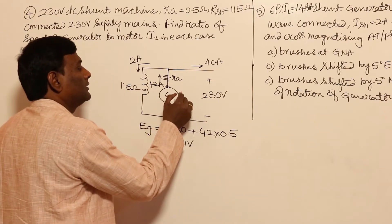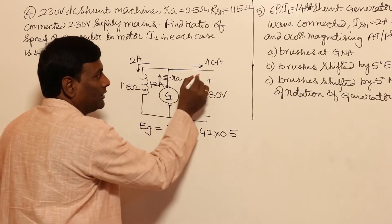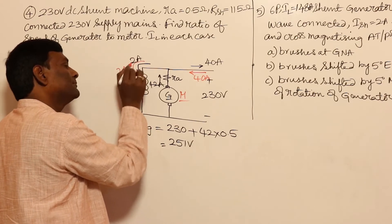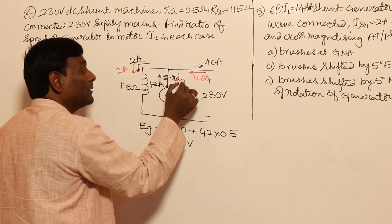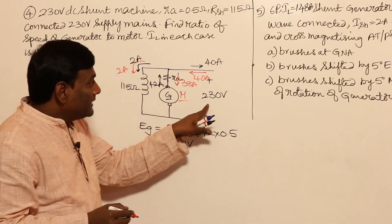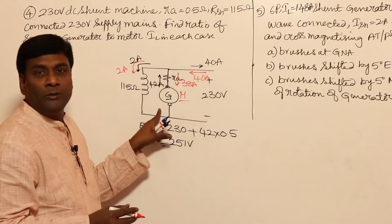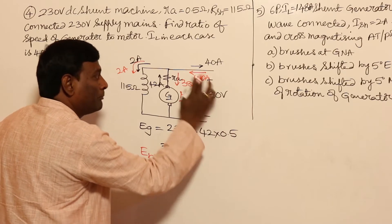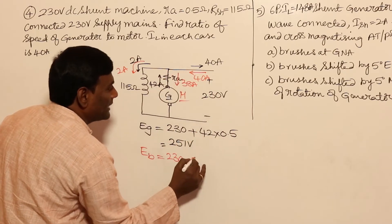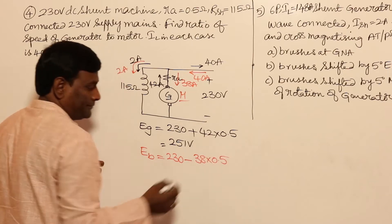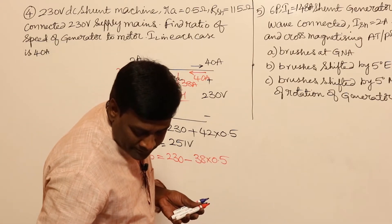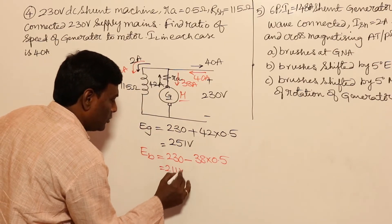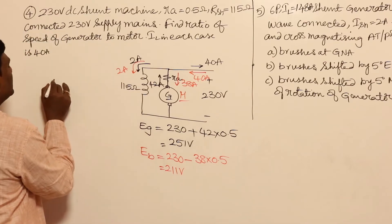Now consider it as a motor. Line current is still 40 amperes. Out of 40 amperes, 2 amperes go to the shunt field, so the armature current is 38 amperes. In motor mode, back EMF EB equals VT minus IA times RA equals 230 minus 38 times 0.5, which gives 211 volts.